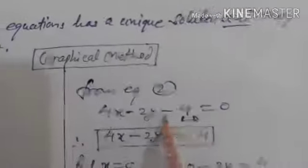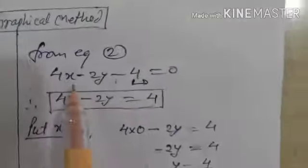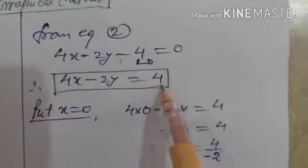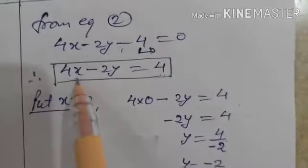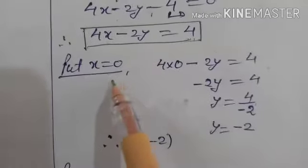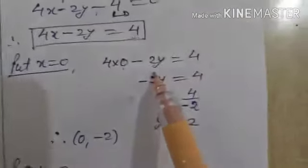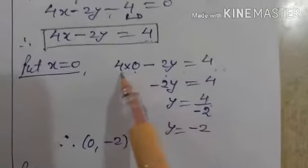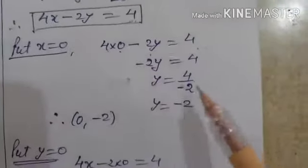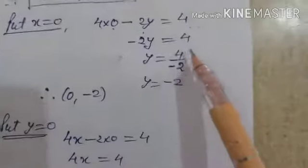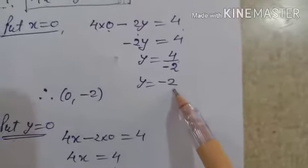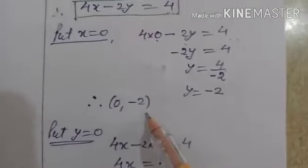From equation number 2: 4x minus 2y minus 4 equal to 0. Transferring minus 4 to the right side gives 4x minus 2y equal to 4. Putting x equal to 0: 4 into 0 minus 2y equals 4, which gives minus 2y equals 4. Dividing by minus 2, y equals minus 2. So the first point is (0, minus 2).